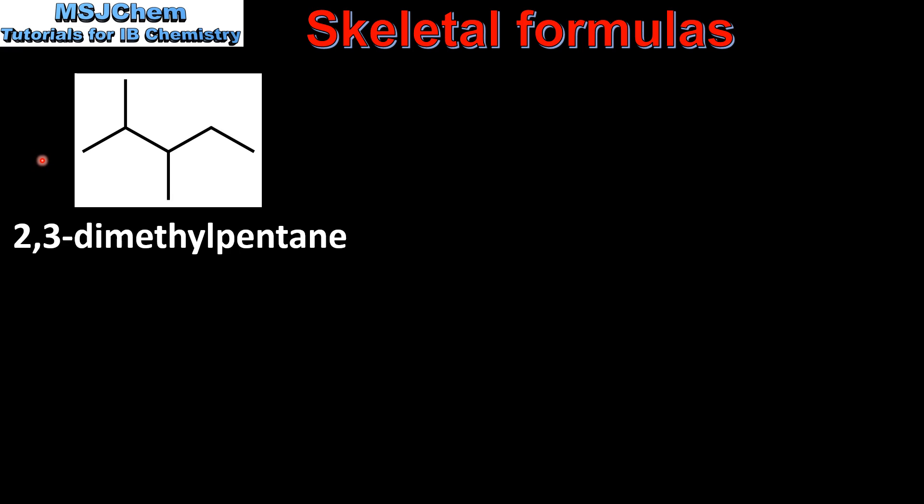To finish off, we'll have a look at some more examples of skeletal formulas. Our first example is a branched alkane. The longest carbon chain is 1, 2, 3, 4, 5 carbon atoms.